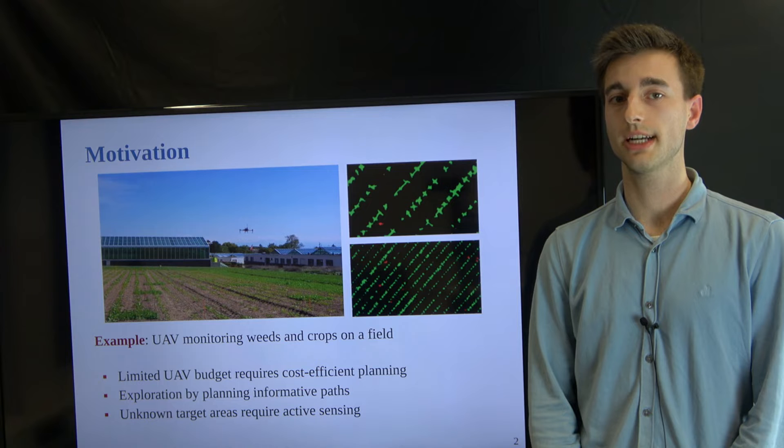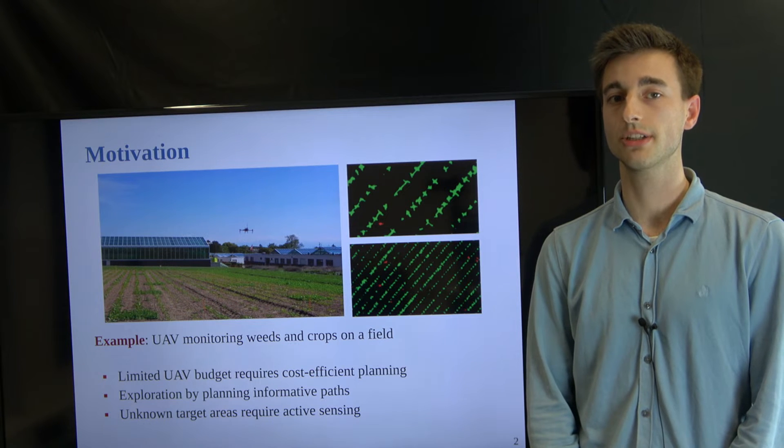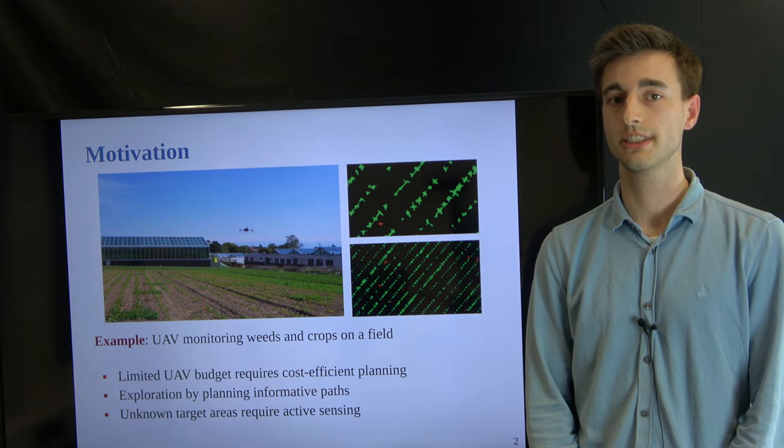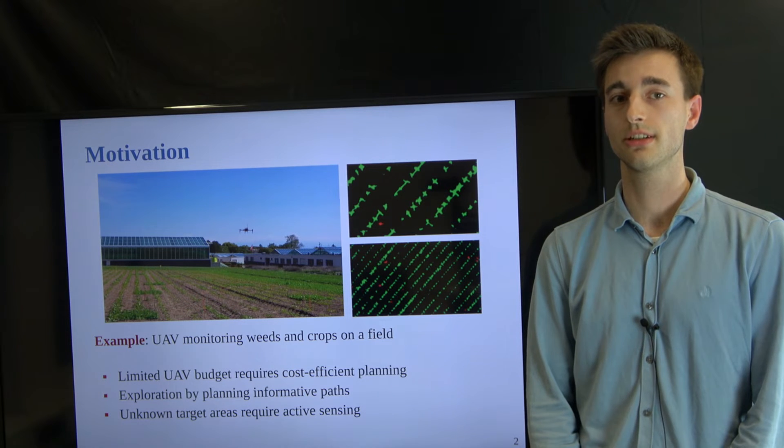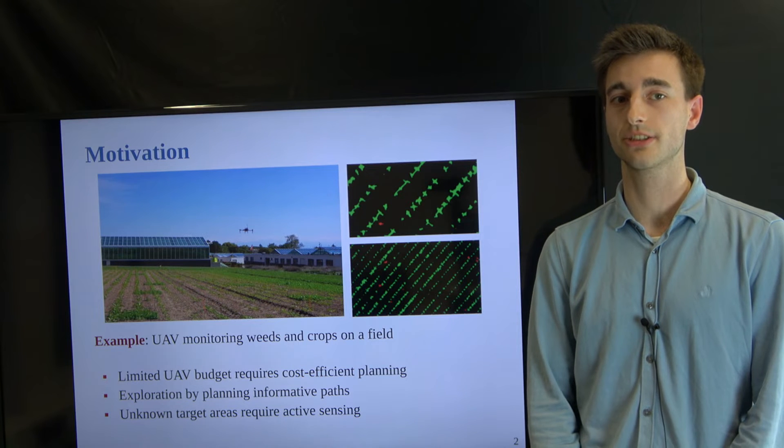This paper examines the task of active sensing using a UAV in terrain monitoring scenarios. Our goal is to map an a priori unknown 2D scalar field such as surface temperature on the terrain using measurements taken by an onboard sensor.